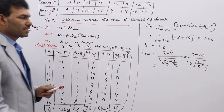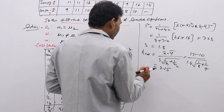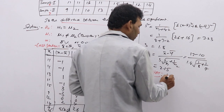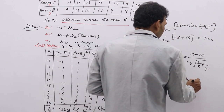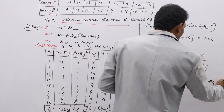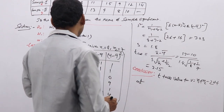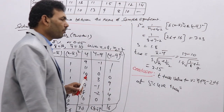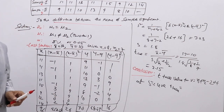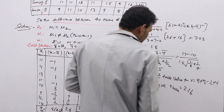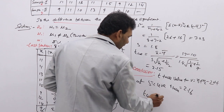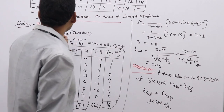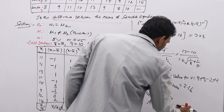T calculated = 2.15. For the conclusion, find T table value at degrees of freedom V = N1 + N2 − 2 = 8 + 7 − 2 = 13, at the 5% level for a two-tailed test. T table value = 2.16. Since T calculated (2.15) < T table (2.16), we accept H0 — the two means are equal.